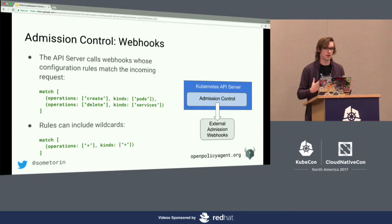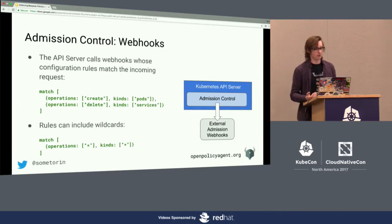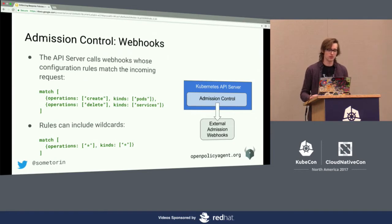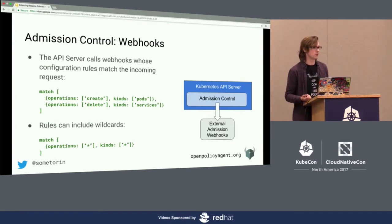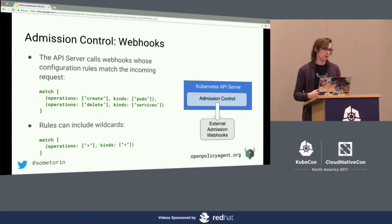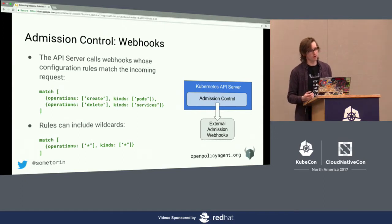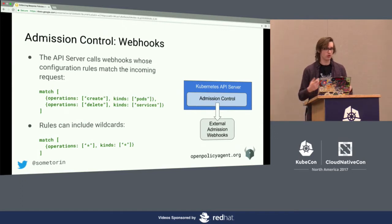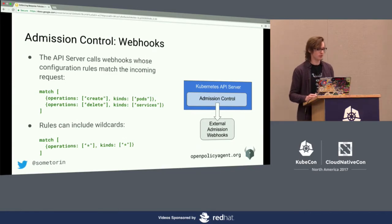The way you actually configure them: you basically specify a bunch of match operations to say, for example, I want my webhook to receive create requests on pods and delete requests on services. Whenever a request comes in that creates a pod or deletes a service, it triggers a callout to the admission controller to decide whether or not to allow or deny the request.